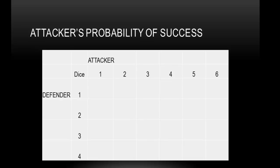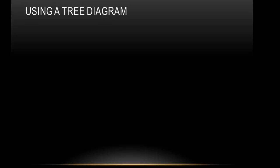Now the easiest battle is a one-on-one. Before we get to that, I just want to review a simple tree diagram to make sure we're all on the same page. To start a tree diagram, we need a bunch of branches. In this example we're going to just have two branches, but we could have many branches — 3, 5, 100.